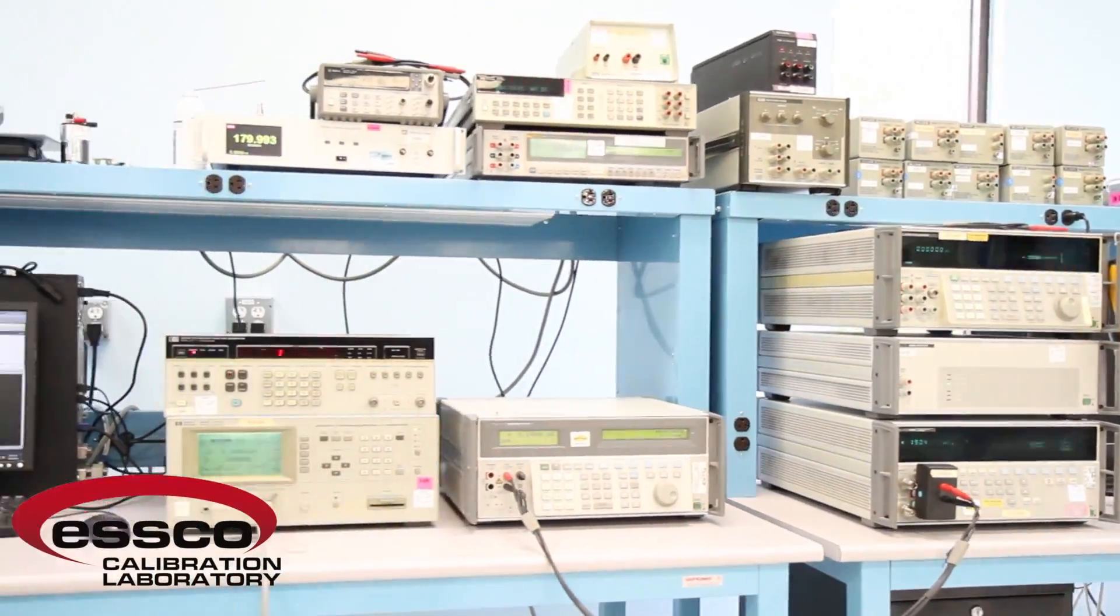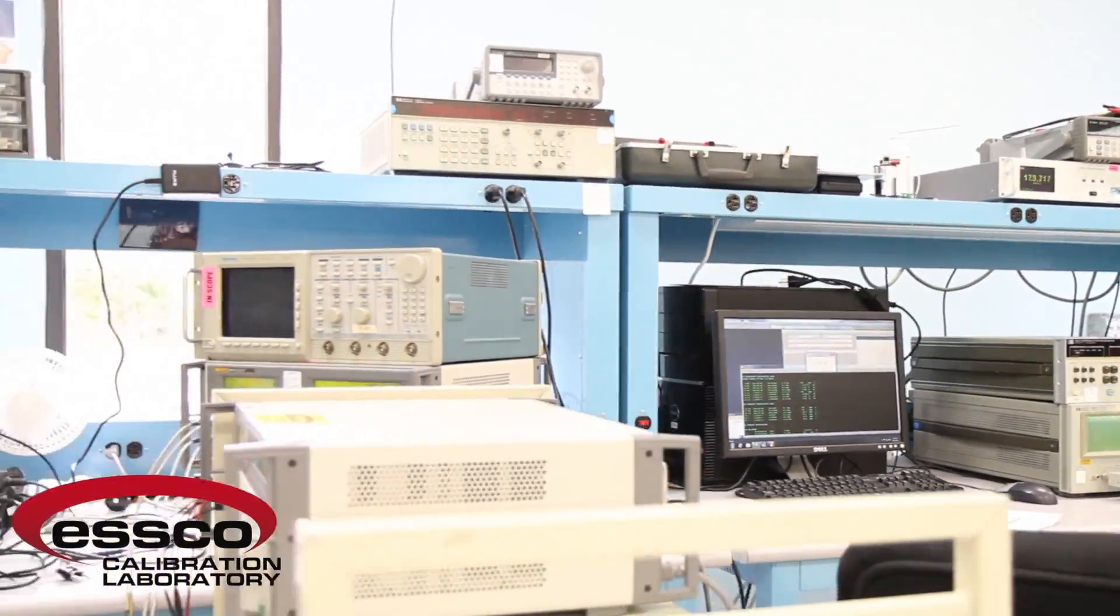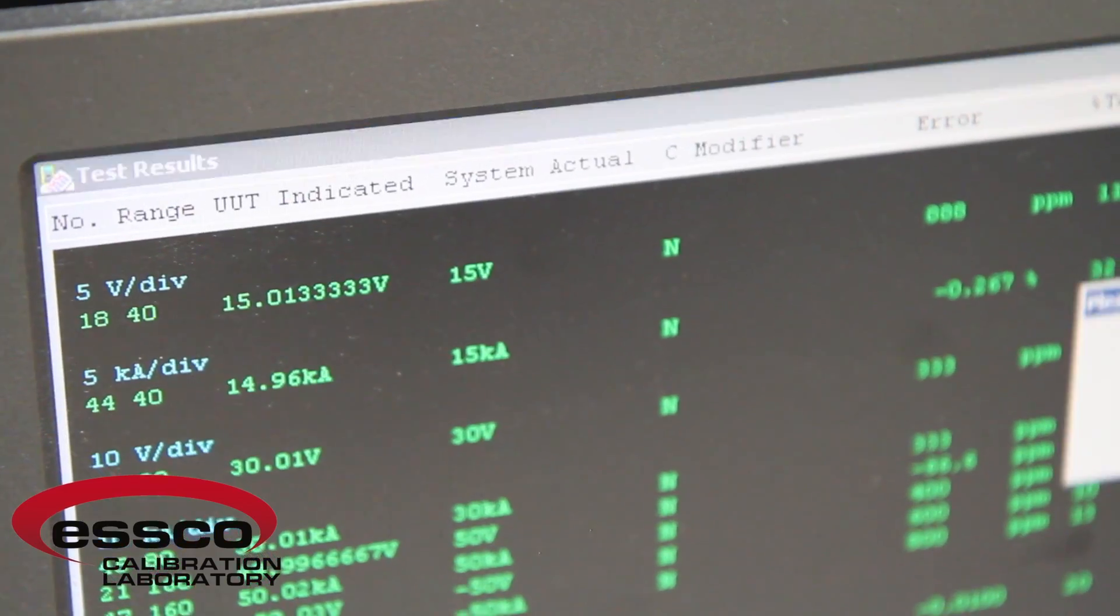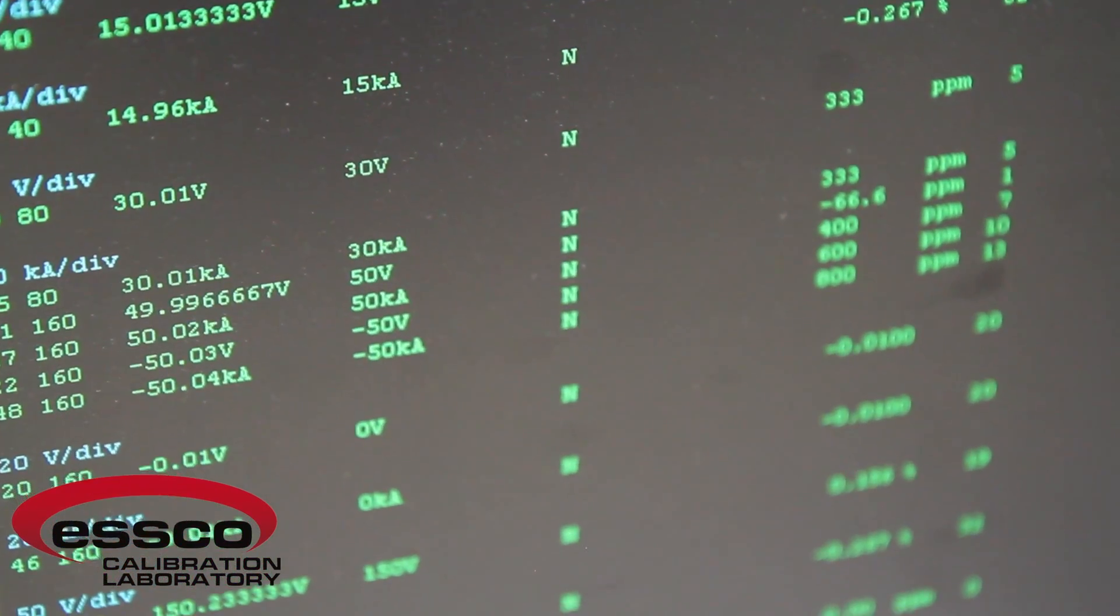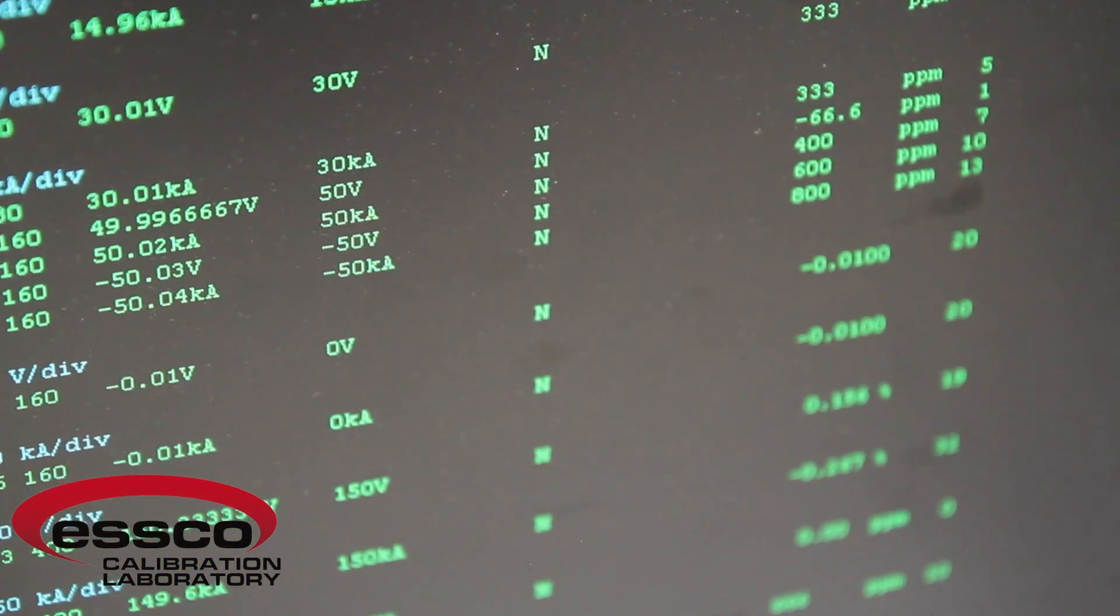Currently, ESCO has three automated test stations running the MetCal software. You can rest assured that all calibrations performed by ESCO, automated or manual, will provide you with the complete documentation to meet your ISO requirements.